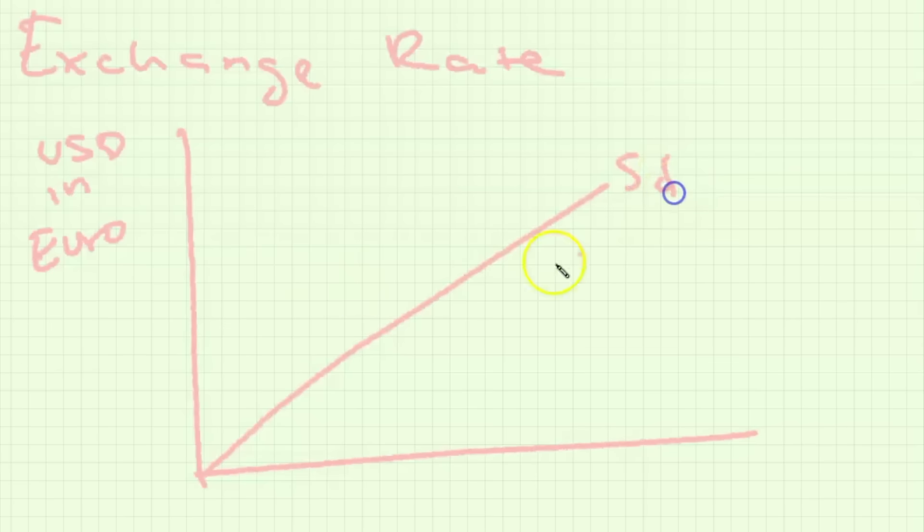For the exchange rate diagram it's really simple. Your y-axis is simply whatever currency you're talking about in terms of another currency because that's the definition of an exchange rate and then its supply of the currency and demand.